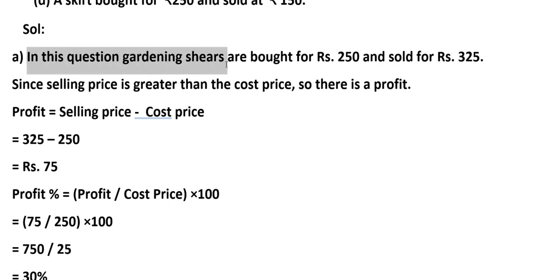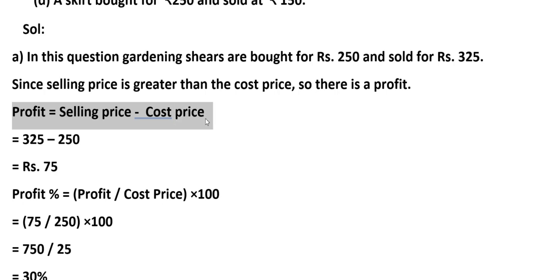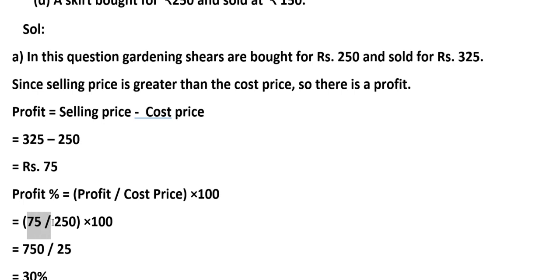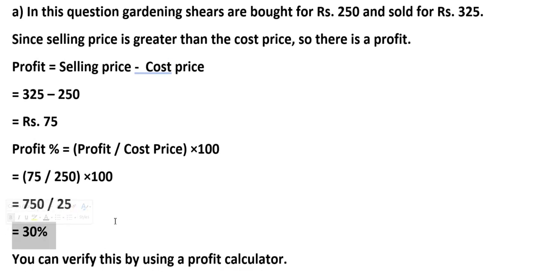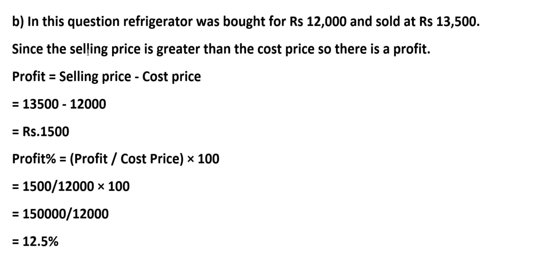First, in this question, gardening shares are bought for Rs. 250 and sold for Rs. 325. Since the selling price is greater than the cost price, so there is a profit. Profit = Selling Price − Cost Price = Rs. 325 − Rs. 250 = Rs. 75. Profit percentage = (Profit ÷ Cost Price) × 100 = (75 ÷ 250) × 100 = 30%.